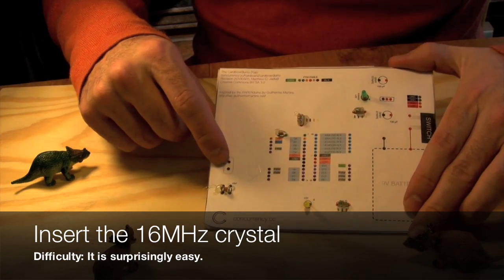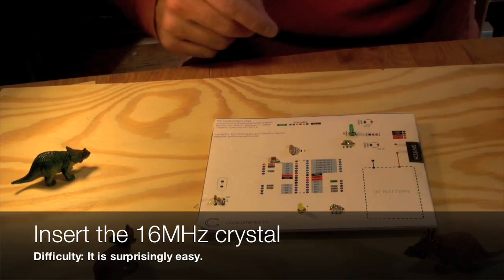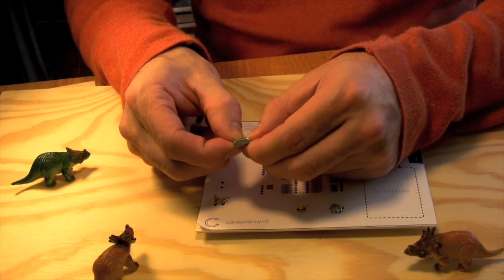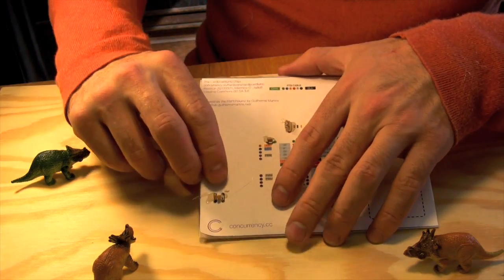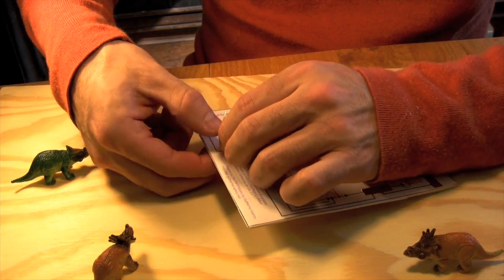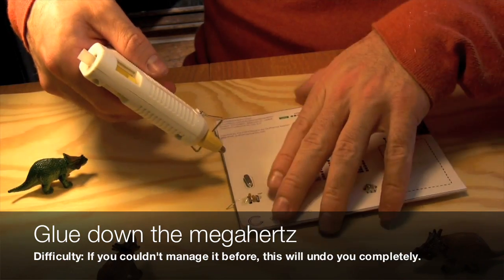Now we can add the 16 MHz crystal. There's again neither a right nor a wrong way, so we'll poke it through the board and then secure it with a bit of hot glue. If you want to learn more about this component, you can go to the Wikipedia and search for crystal oscillator.